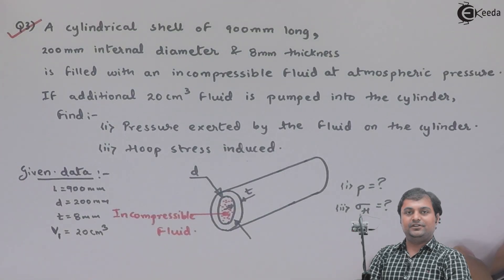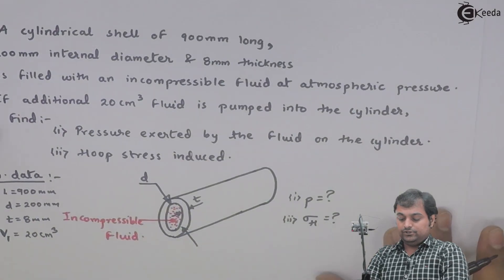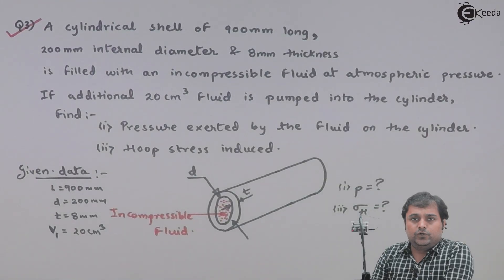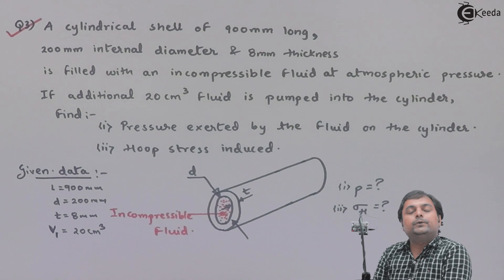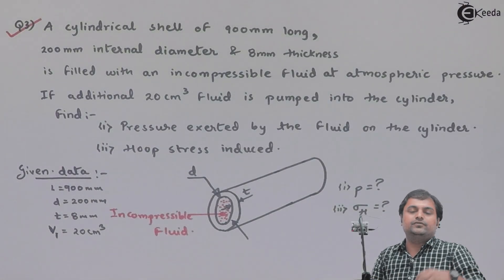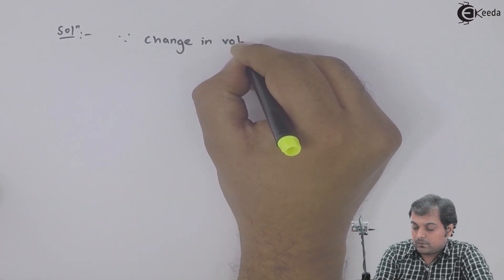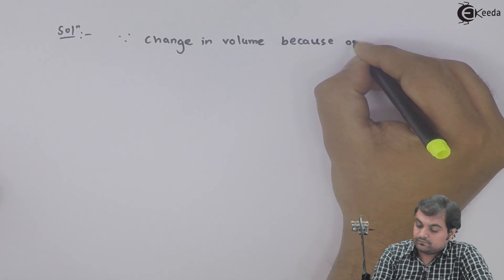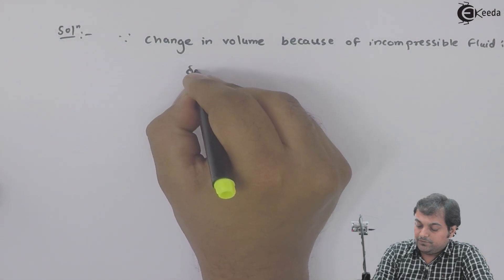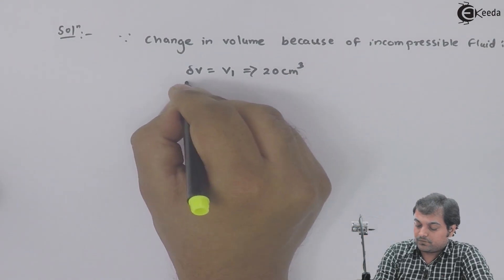For the solution: this cylinder is filled with incompressible fluid — we can assume it is water since the type is not mentioned. When the cylinder is filled, there are chances of its volume changing due to internal pressure. Since the change in volume is due to the incompressible fluid, ΔV = V₁ = 20 cm³ as given.